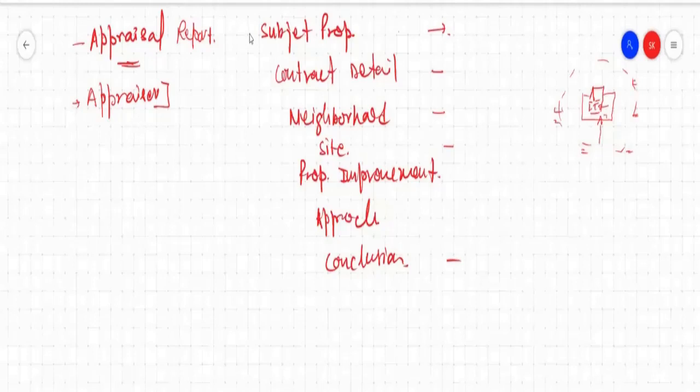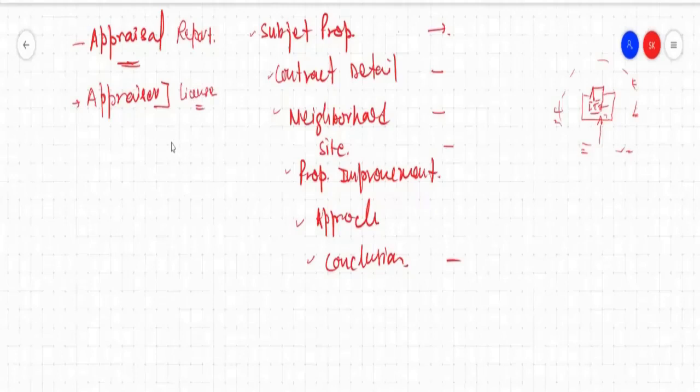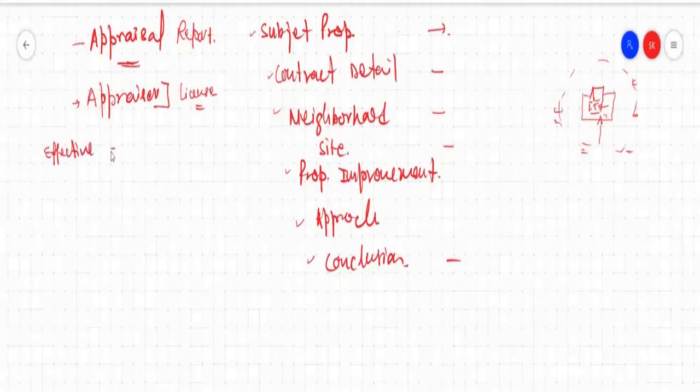The appraiser is the person who will be giving us all this detail, will notate all this detail, will create a document and will provide their license — 'I am the licensed appraiser, here is my license.' So the appraiser license should always be in the file, along with all the detail that has been created. There will be certification information showing when this appraisal has been created, and that becomes the effective date — from which date this appraisal is effective.